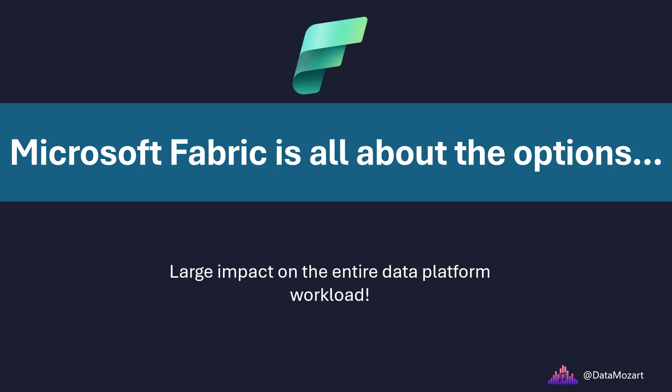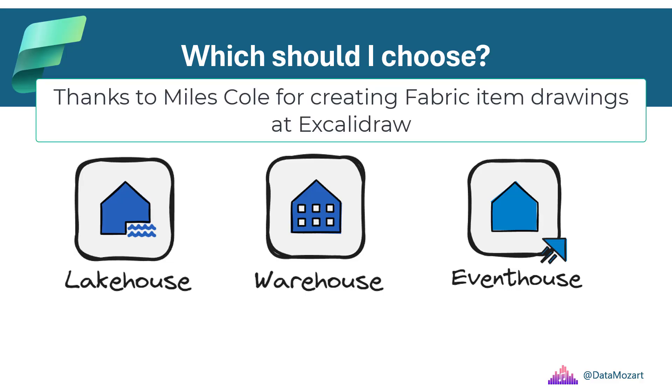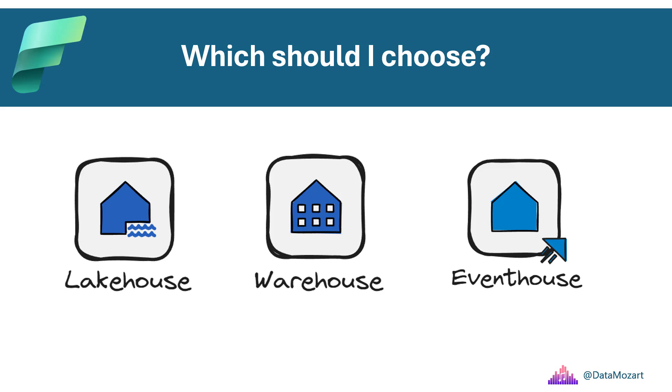For example, to complete task XYZ in Microsoft Fabric, all Microsoft Fabric roads lead to one lake — we already know that mantra. However, which road is right for us? Should we pick a lake house, a warehouse, or maybe an event house for storing data in one lake? There are numerous factors to take into account, so let's explore three that I consider most relevant.